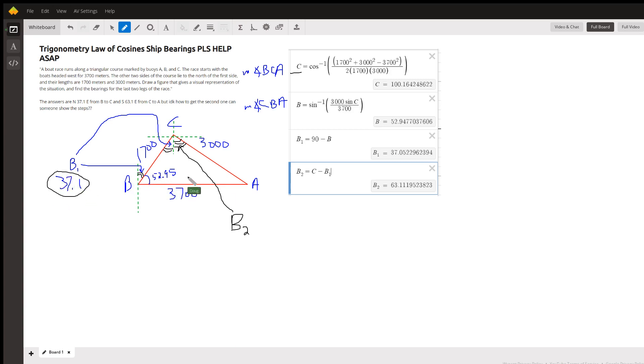Now, if we draw these horizontal and vertical segments at point C, we can see that this angle B₁ right here with a measure of 37.1 degrees is congruent to this angle right here...